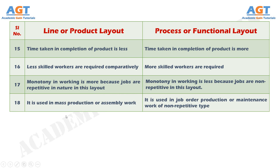Number 18: Product layout is used in mass production or assembly work, whereas process layout is used in job order production or maintenance work of non-repetitive type. So, we have discussed the differences between line or product layout and process or functional layout. If this video was helpful, subscribe to Academic Gain Tutorials on YouTube for more updated videos. Thank you.